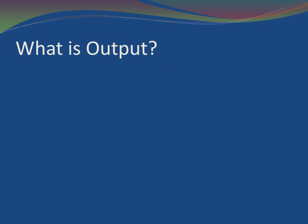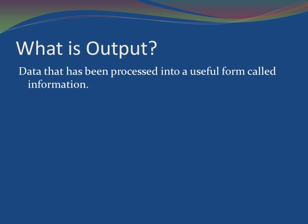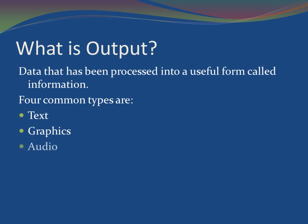What is output? Output is data that has been processed into a useful form called information — that is, a computer processes input into output. There are four common types: text, graphics, audio, and video. Text consists of characters that are used to create words, sentences, and paragraphs.